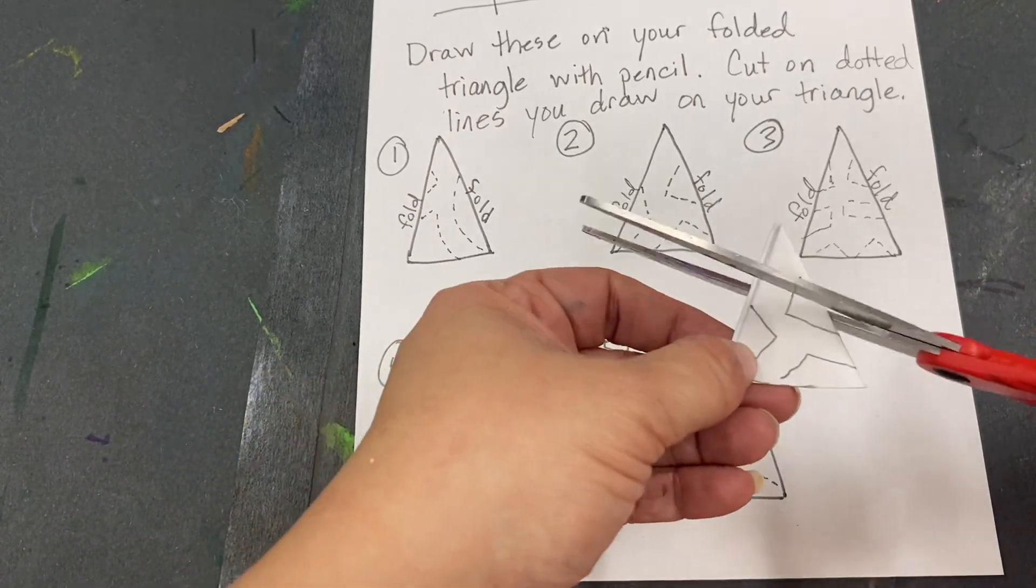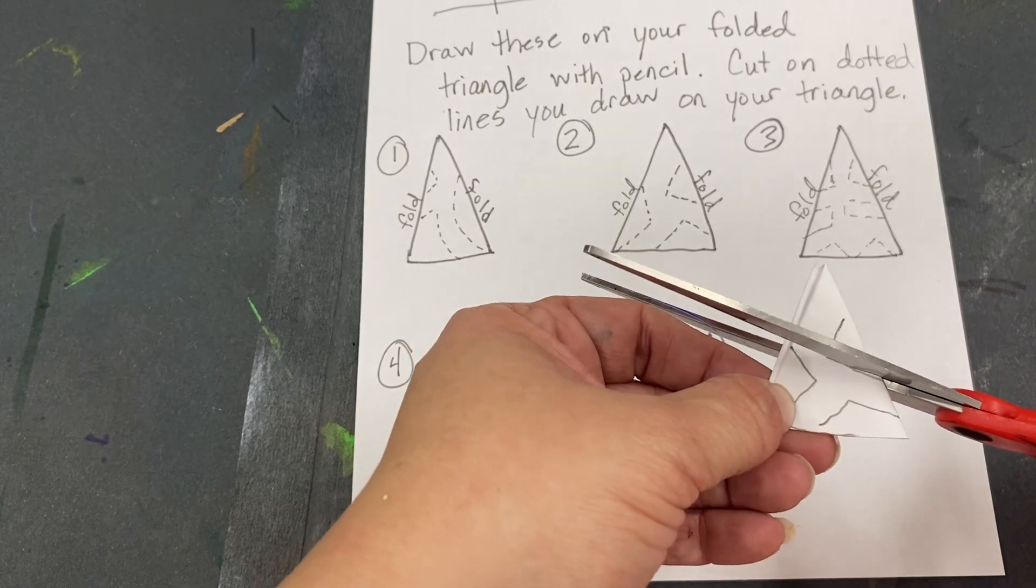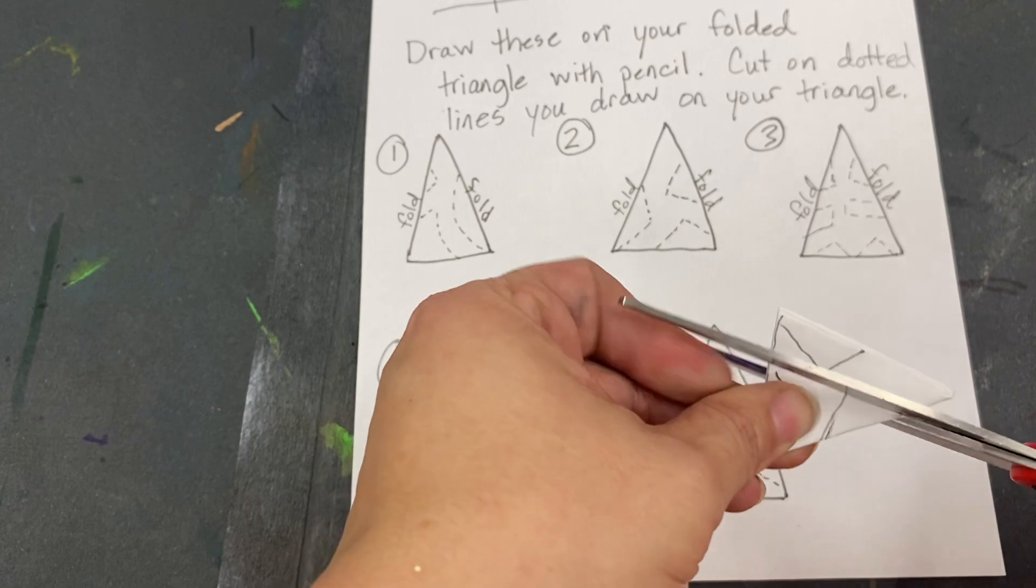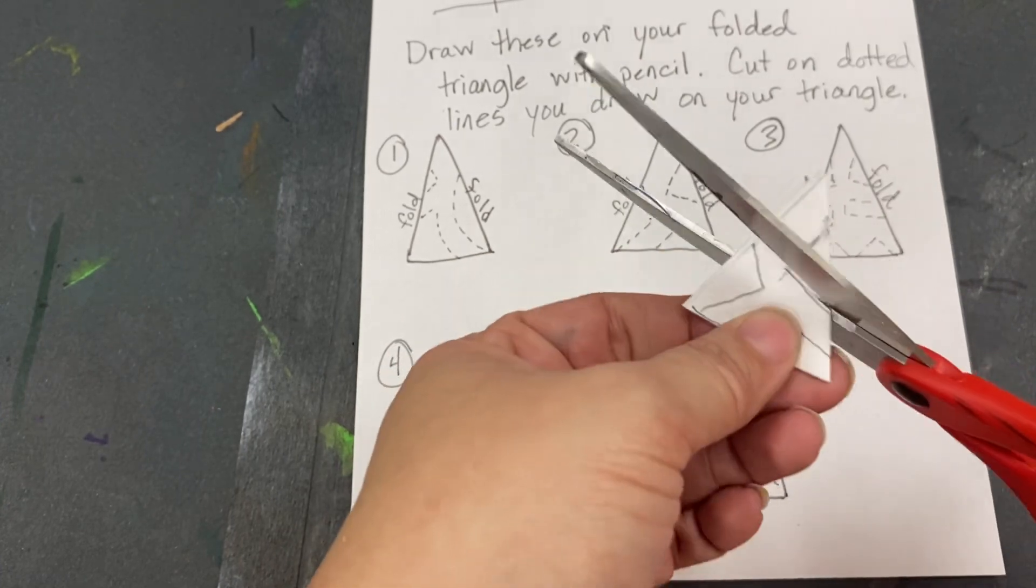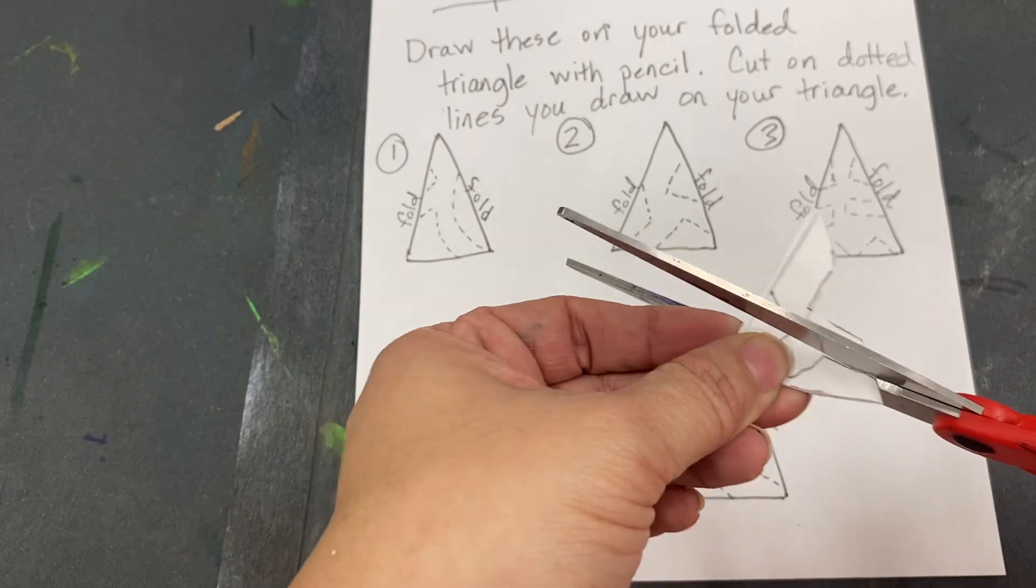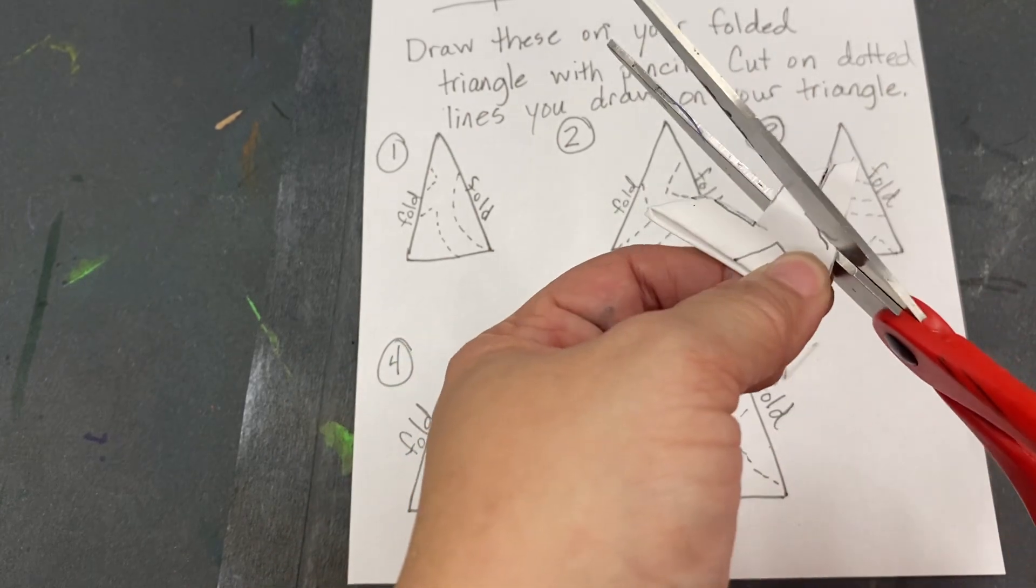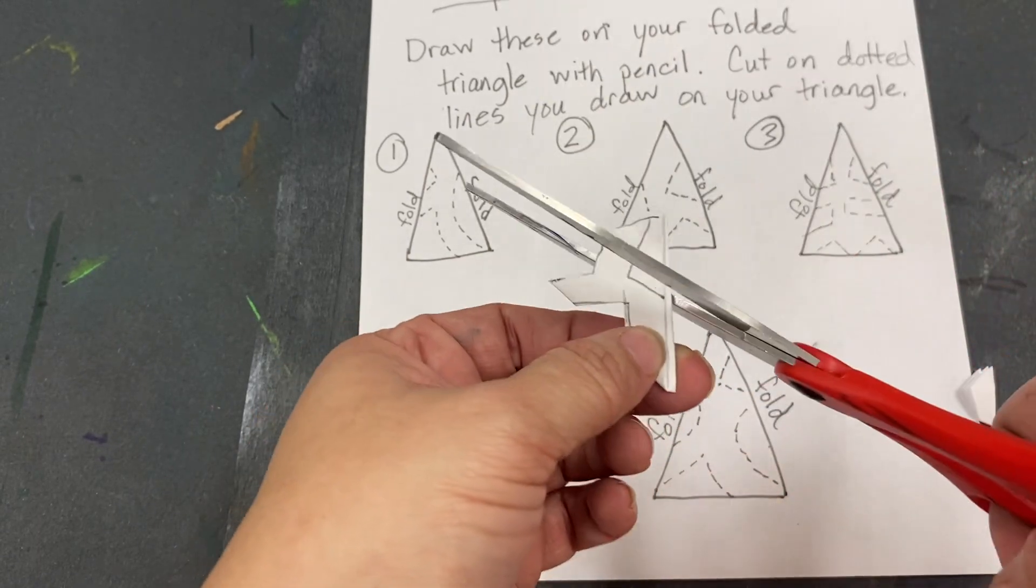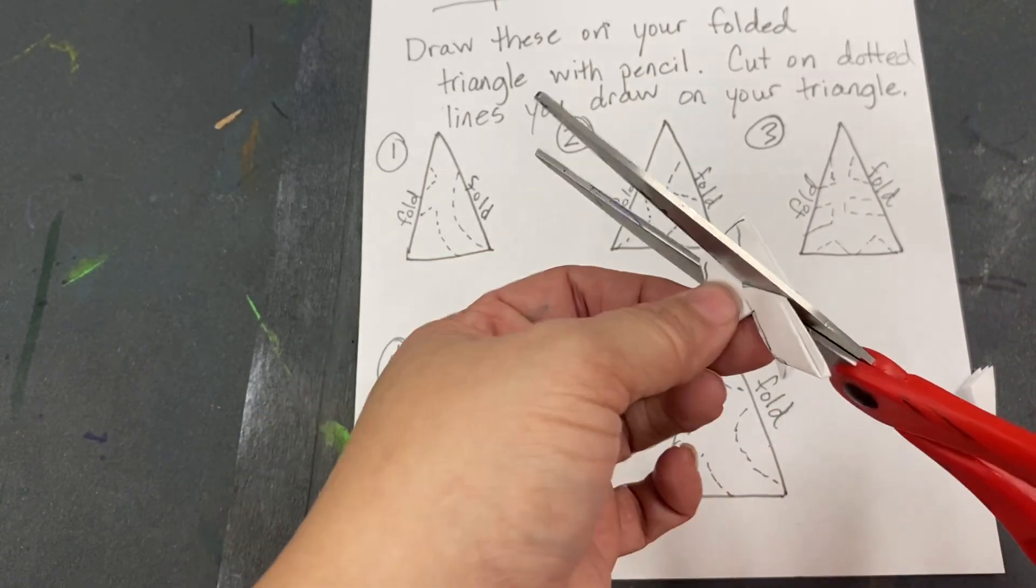And now I'm going to cut on those lines while I keep it folded. And this paper is thicker than you normally would have to cut. So you want to open your scissors up all the way and put your paper all the way into the back of the scissors. And we're going to cut out those three shapes I just drew.